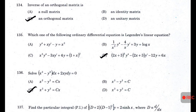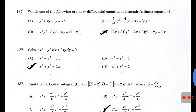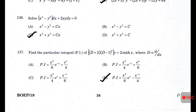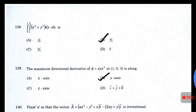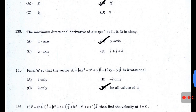Solve the ODE — answer C: x² + y² = cx. Find the particular integral of (D + 2)(D − 1)²y = 2·sinh(x), where D = d/dx — answer D. Evaluate the double integral from 0 to 1 and 1 to 2 of (x² + y²)·dy·dx — answer B: 8/3.